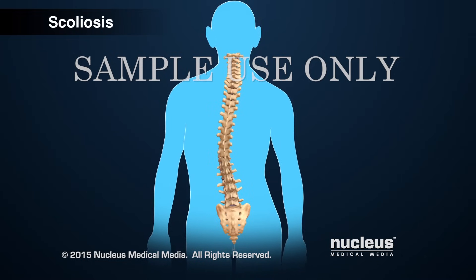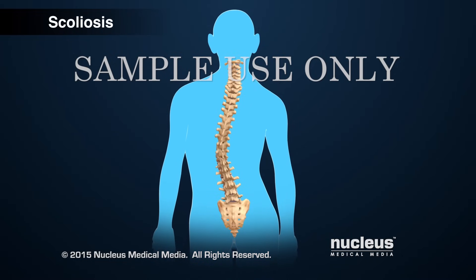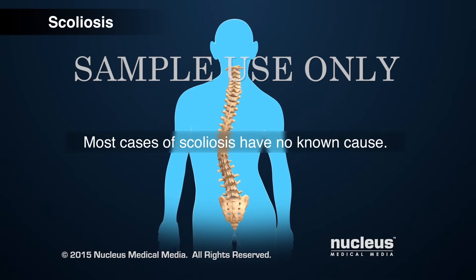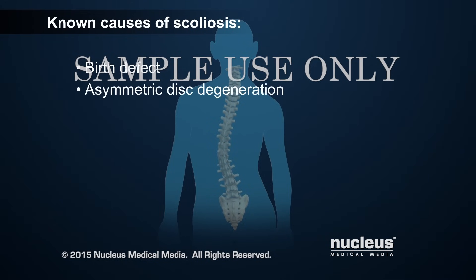Scoliosis is a condition where the spine has an abnormal side-to-side curve. Most cases of scoliosis have no known cause. In some cases, scoliosis may be present at birth. In other cases, it may occur over time. The most common cause in adults is asymmetric degeneration of the discs, causing the spine to be tilted to one side or the other.